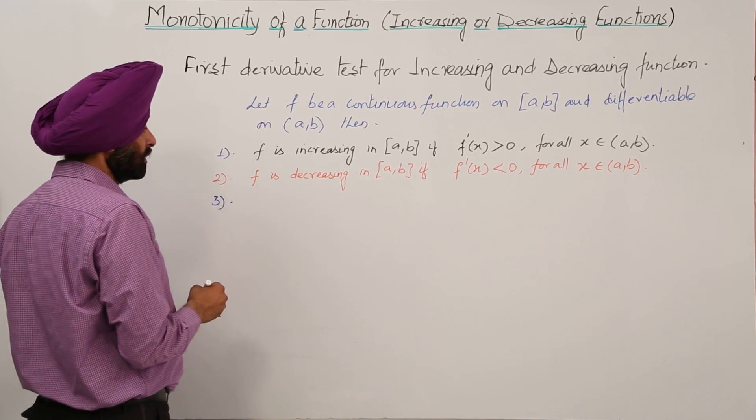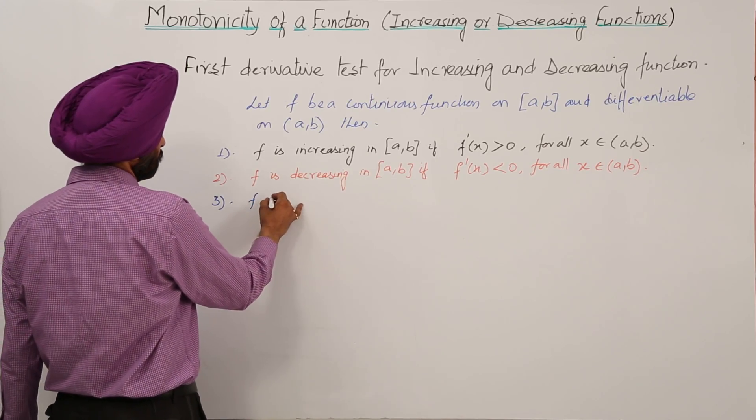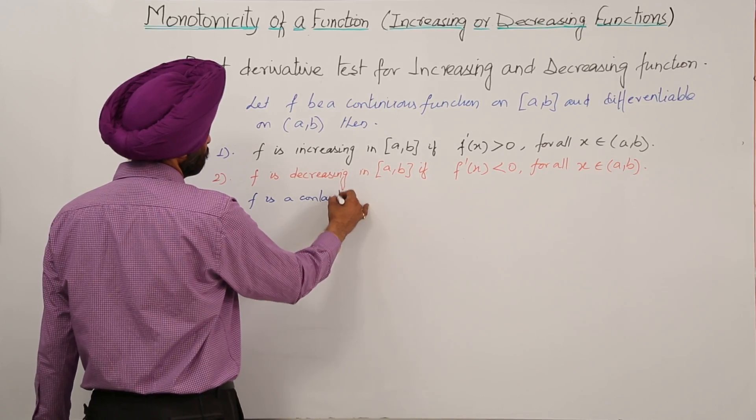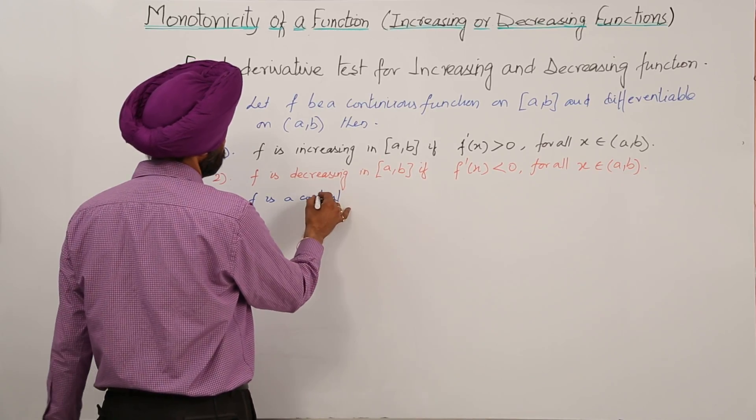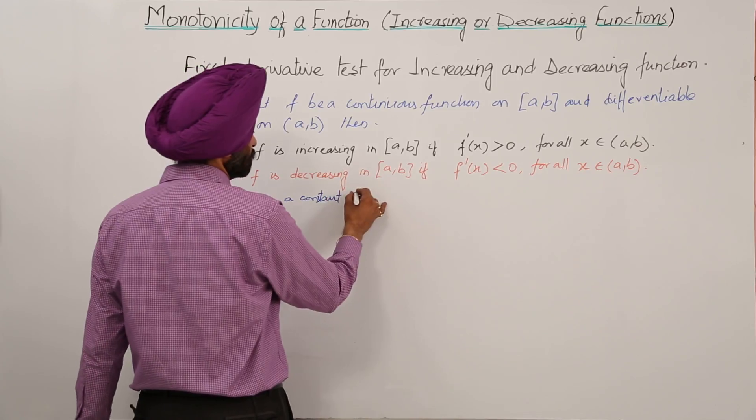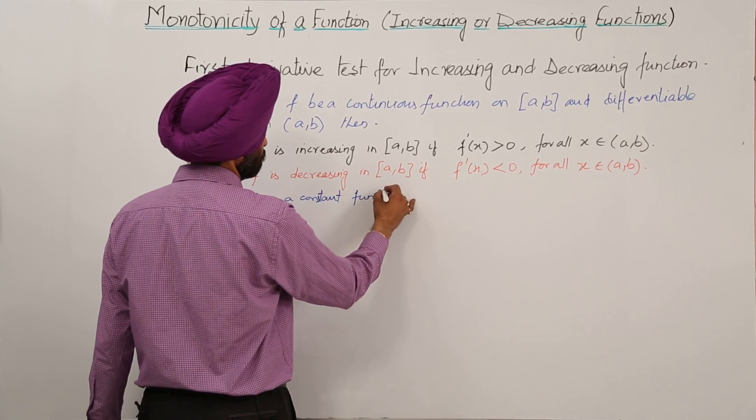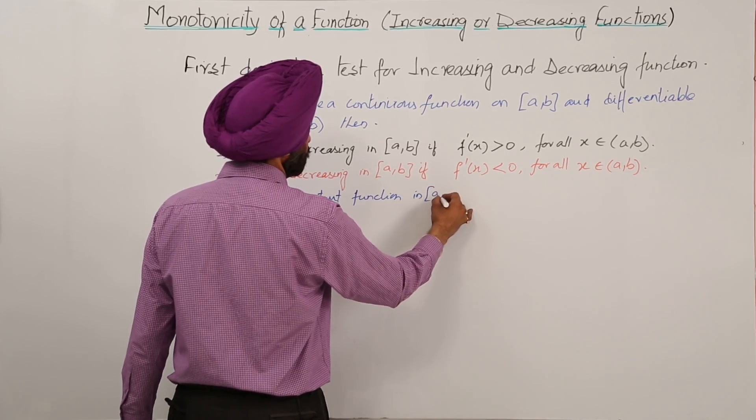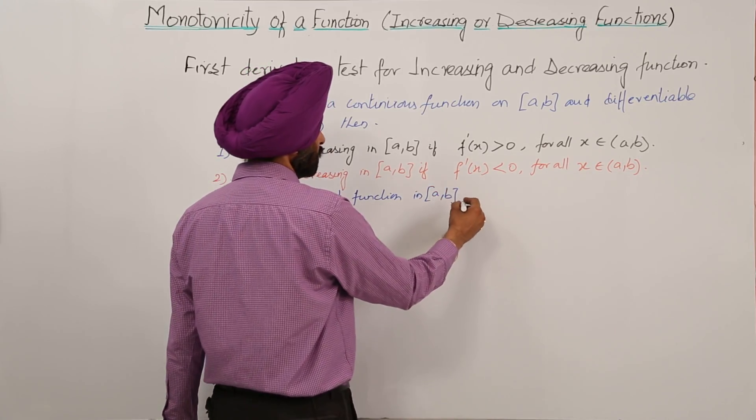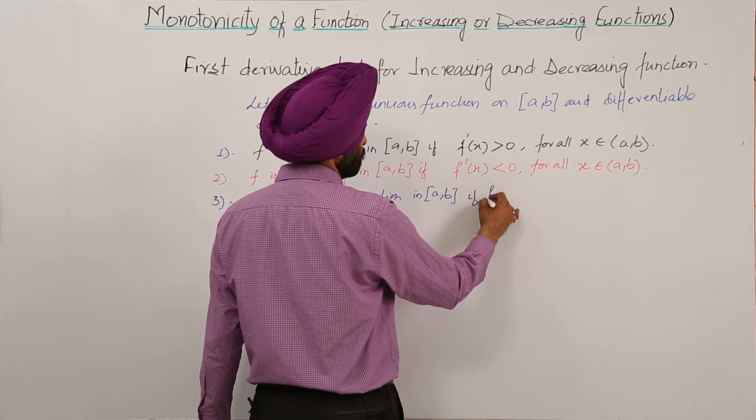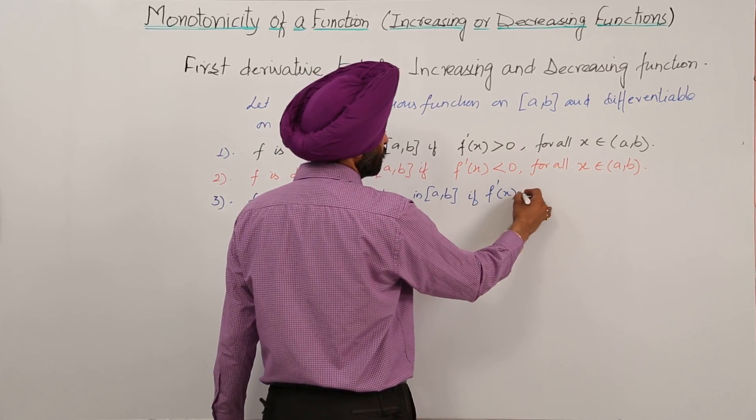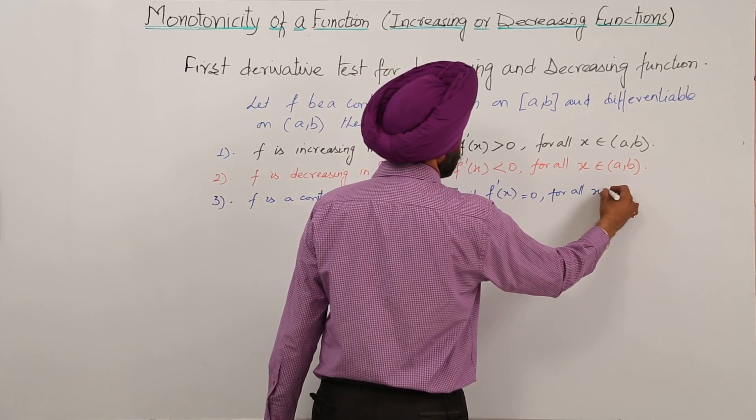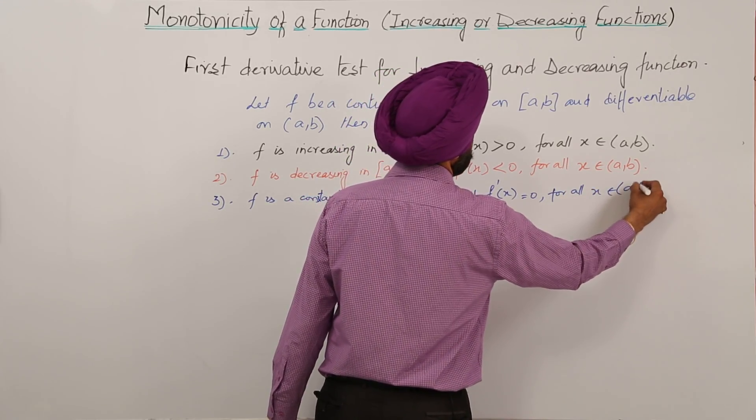Third: f is a constant function in [a,b] if f'(x) equals 0 for all x belonging to (a,b).